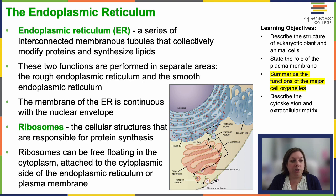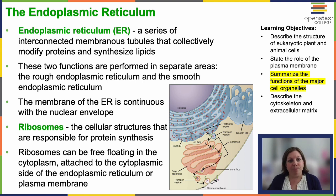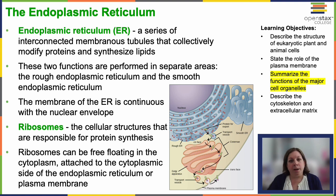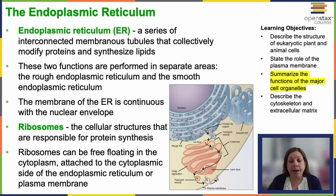This is really interesting — the endomembrane system plays an important role in clearing your body of things like ethanol, or if you consume pain medications like Tylenol, which produces a byproduct that has to be metabolized by specialized cells to get it out of your system. The endoplasmic reticulum plays an important role in that.